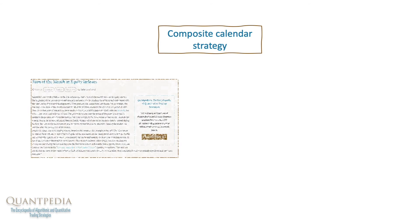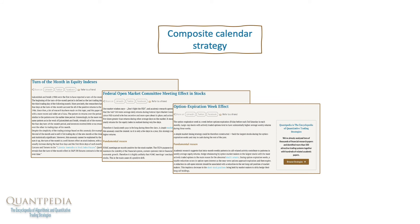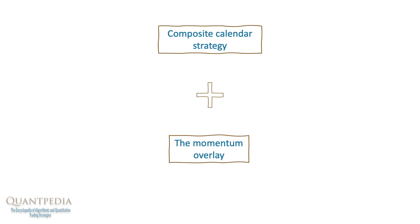The four strategies mentioned are the turn of the month in equity indexes, the Federal Open Market Committee meeting effect in stocks, the option expiration week effect and the payday effect. We can combine the resultant calendar strategy with a second building block, the momentum overlay.